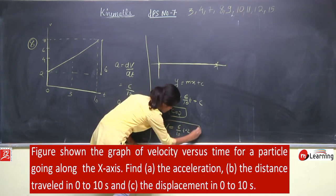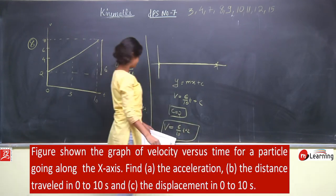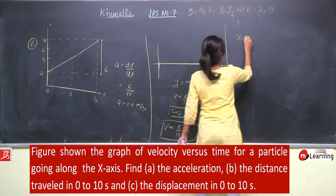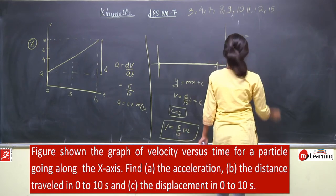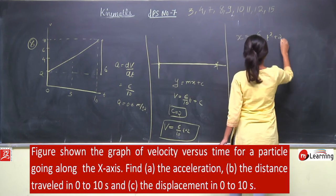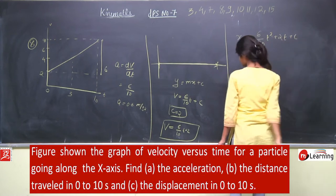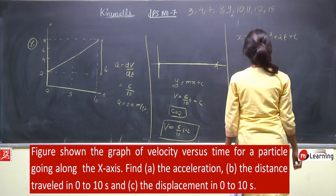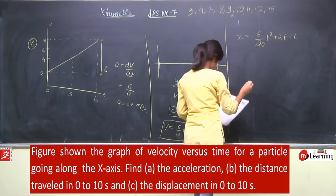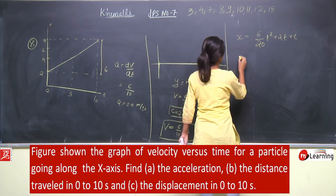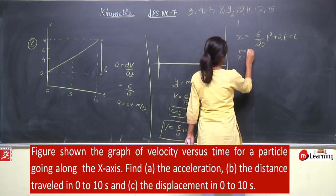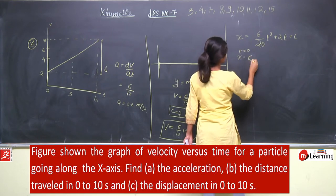तो position x कितनी हो जाएगी? Integrate करते हैं: x = (6/20)t² + 2t + c. x = 0 से start किया हो — हमें distance travelled निकालना है। At t = 0, x was equal to c.